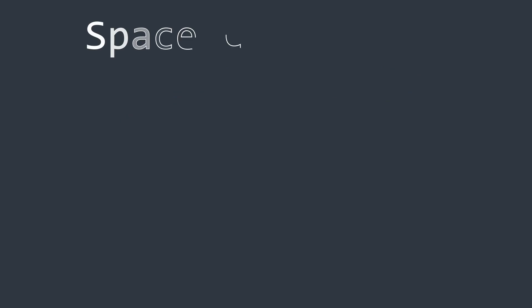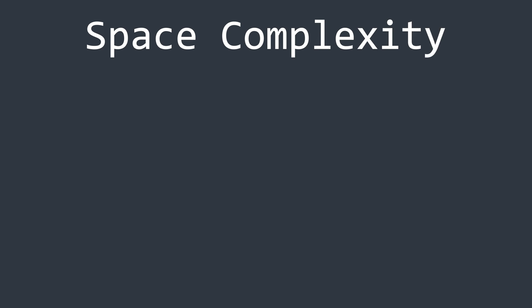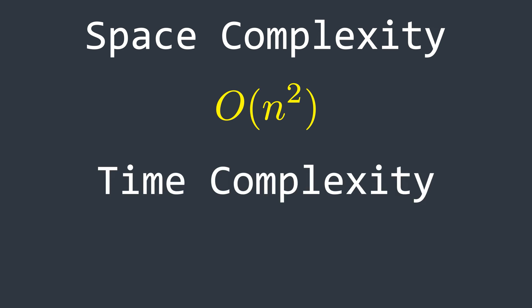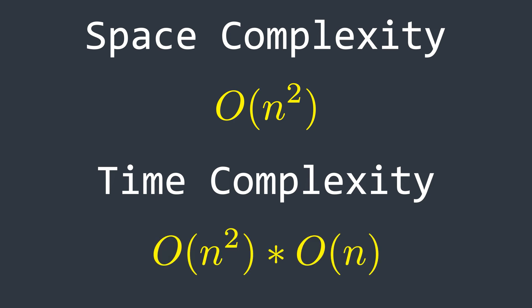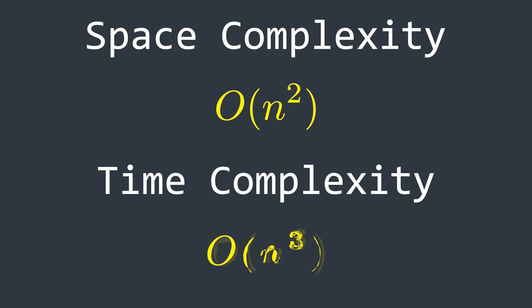The space complexity is straightforward: since we use two n×n matrices, the space complexity is O(n²). We visit half of the table, which takes O(n²) time, and in each iteration we check all possible splits, which takes O(n) — giving a net time complexity of O(n³).